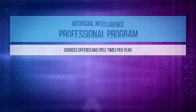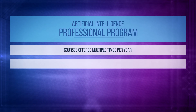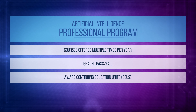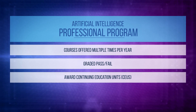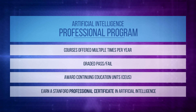The online courses are offered multiple times per year. Professional courses are graded pass-fail and award continuing education units, or CEUs. When you successfully complete any three courses in the program, you will earn a Stanford Professional Certificate in Artificial Intelligence.